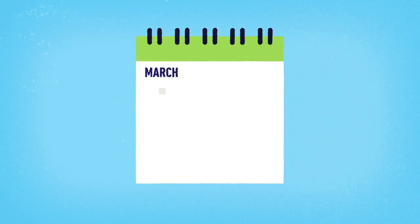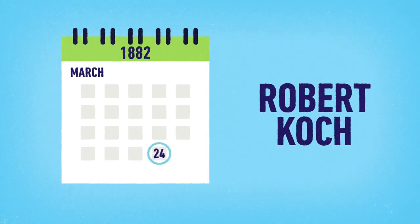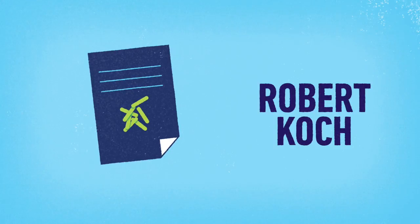Throughout this time, scientists were struggling to work out what caused TB. Was it inherited or infectious? This all changed on March 24, 1882. German scientist Robert Koch demonstrated that TB was indeed a bacterial infectious disease.